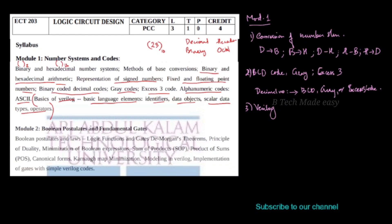Module 2 is Boolean Postulates and Fundamental Gates. Let's go to Boolean Algebra. Boolean Postulates and Laws, and Logic Functions and Gates. There are different types of gates: AND gates, OR gates, NOT gates — these are the basic gates.